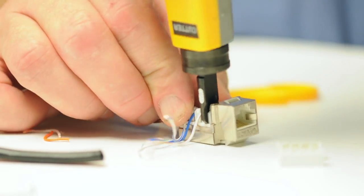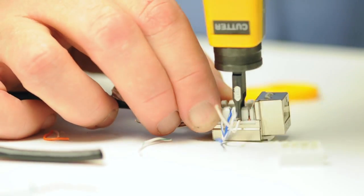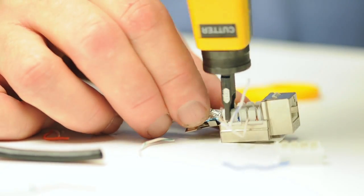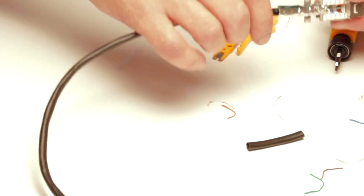Using my punch down tool, I will punch down the conductors, inserting them fully into the IDC connector and clipping off the excess cable.